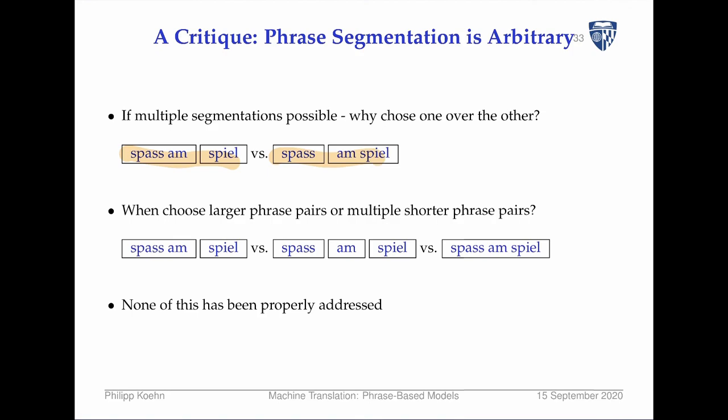We choose the segmentation that gives higher probabilities at the end. Also, should we choose to use small phrases or large phrases in our model? All this is kind of left up to the model. The only thing vaguely resembling an address to this — from what I've discussed so far — was to have a phrase count feature that might prefer shorter or longer phrases on average.